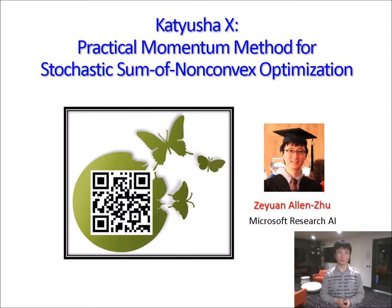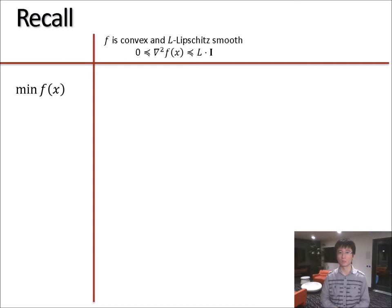Consider a simple task of minimizing a function f(x), that is convex and Lipschitz smooth, meaning that all of the eigenvalues of the Hessian are upper bounded.